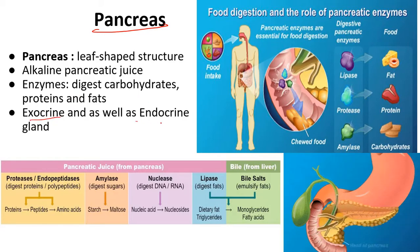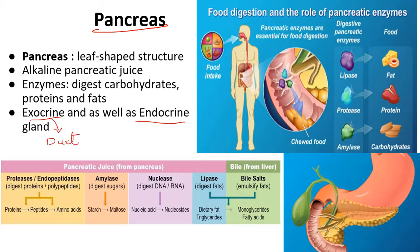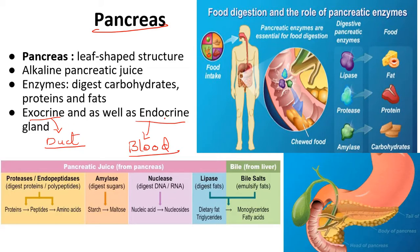This pancreas is said to be an exocrine as well as an endocrine gland — this is very important information. Exocrine means it can release its secretions into ducts, which are pipe-like structures. It can also act as an endocrine gland by releasing its secretions directly into the blood. So it is both exocrine and endocrine.